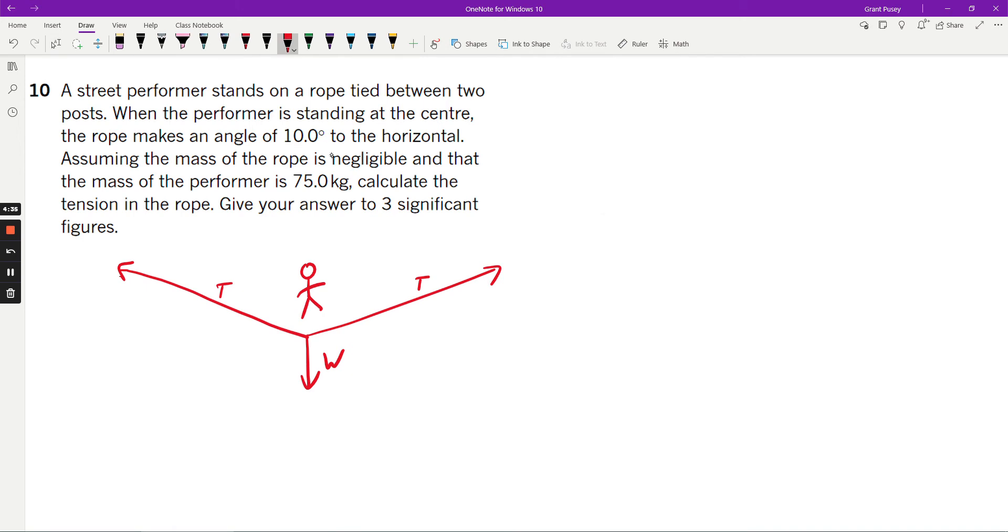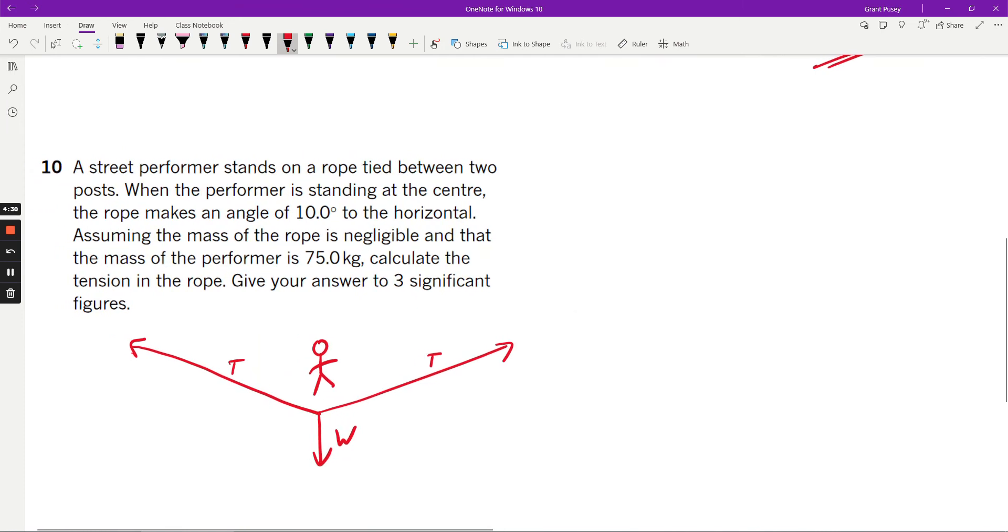It's told you the mass, but says that the rope makes an angle of 10 degrees to the horizontal. What that would mean is this angle here is 10 degrees, or you can also say this angle here is 10 degrees.